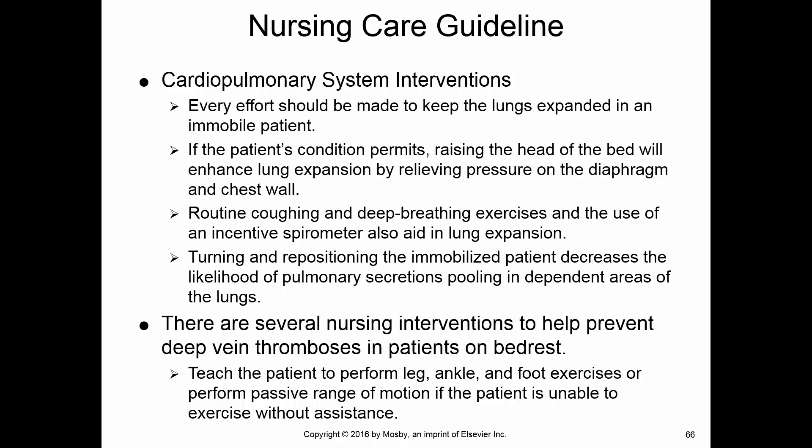If a patient has a cardiopulmonary problem affecting their mobility, we can do interventions to help improve their cardiopulmonary status. One simple intervention is coughing and deep breathing exercises or use of an incentive spirometer. Also, raising the head of the bed, turning the patient frequently, and repositioning will help. To help prevent DVTs, we do range of motion activities on the patient's legs to help keep blood flowing.